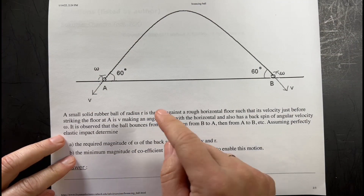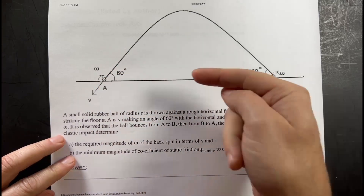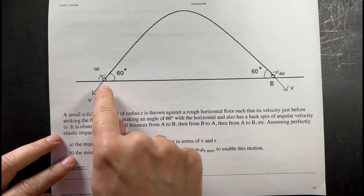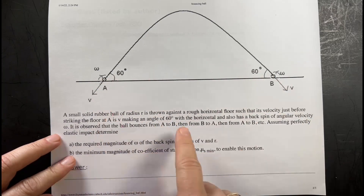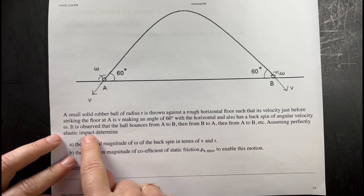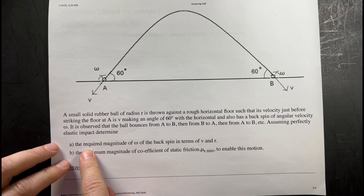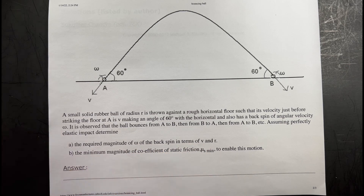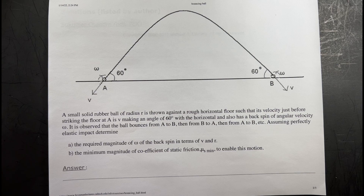It's backspin because it spins in the opposite direction of the horizontal direction. It is observed that the ball bounces from A to B and then back to A, so it bounces back and forth, assuming perfectly elastic impact. This is kind of strange. Let's just jump right into it — if you're not sure what to do, just do something.